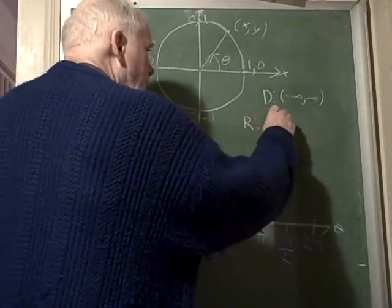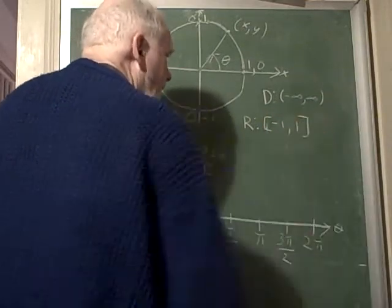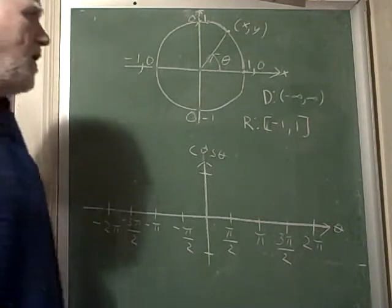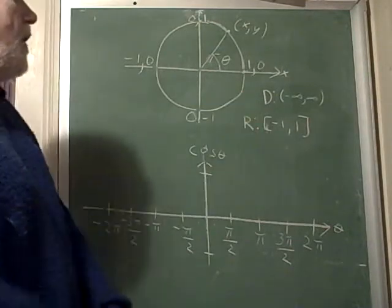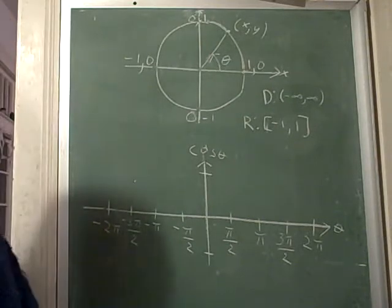just like with the sine, only values from negative 1 to 1, including 1 and negative 1. So it's got the same domain and range as the sine function. In fact, we're going to see that it looks a lot like the sine function just moved over.